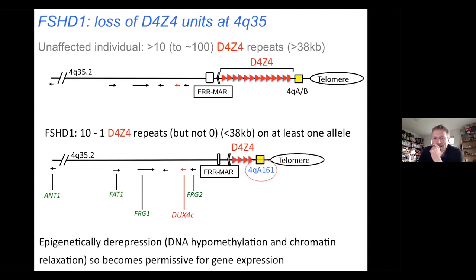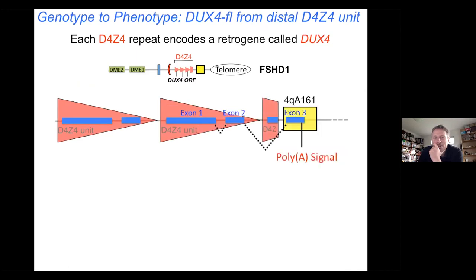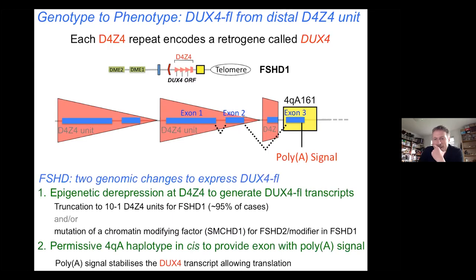And why does that matter? Because each of the D4Z4 units contains an open reading frame for a retrogene. When you have epigenetic derepression, you allow transcription of the retrogene. It encodes a transcription factor called DUX4. And on a certain haplotype, you have a polyadenylation signal, so you stabilise expression. Essentially, it's a toxic gain of function — a transcription factor is produced that's not normally present in muscle and has deleterious effects.